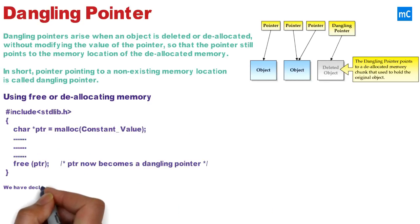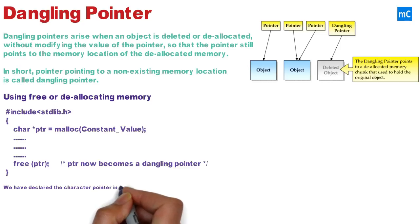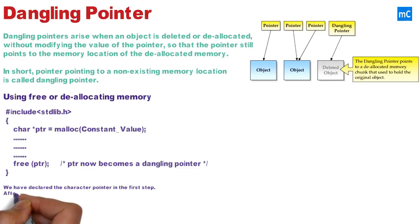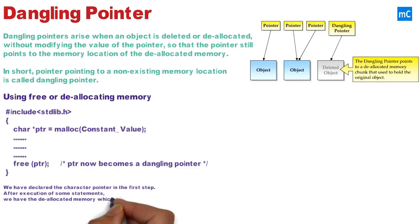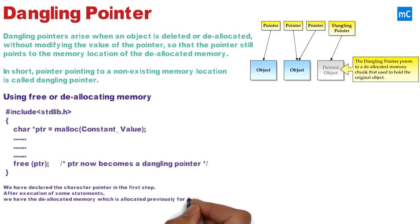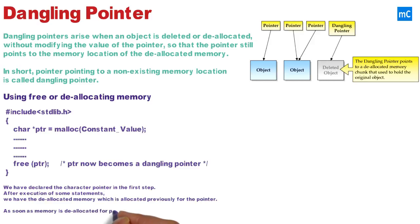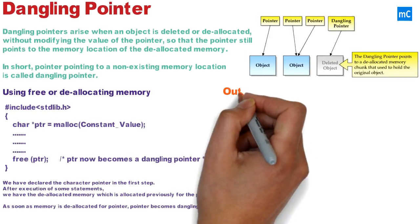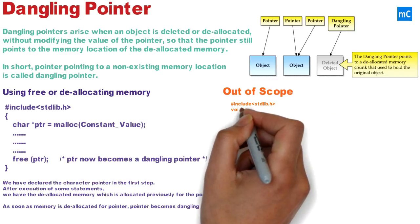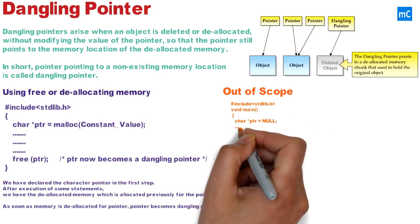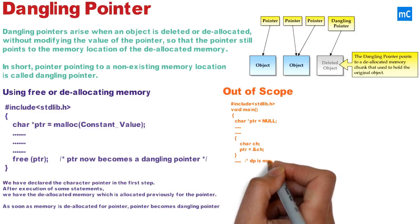In this example, we have declared a character pointer in the first step. After execution of some statements, we have deallocated the memory which was allocated previously for the pointer. As soon as the memory is deallocated for the pointer, the pointer becomes a dangling pointer. Next we will move to the next type, that is the out-of-scope dangling pointer.